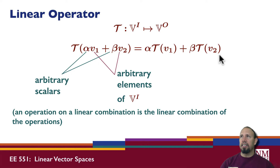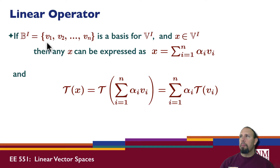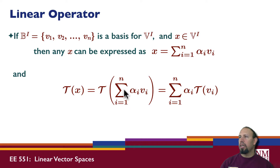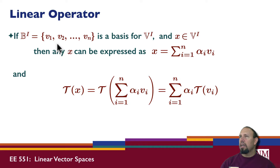Now let's see some facets of this. First, we're going to talk about something called a basis. If we have a set of n vectors for Vi, a basis is a set of vectors that are independent in Vi. We can show that for any x in the input space, x can be expressed as a linear combination of the basis vectors. If we plug that x into our linear operator, the operation on that weighted sum equals the weighted sum of the operations on the individual vectors.